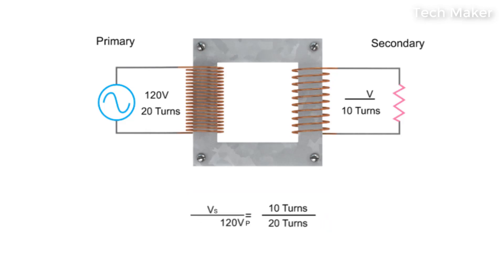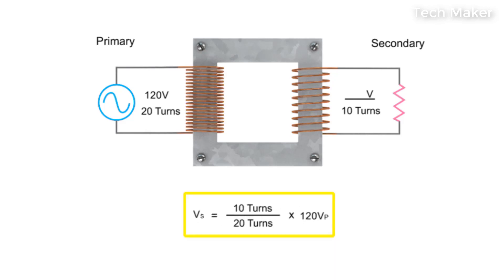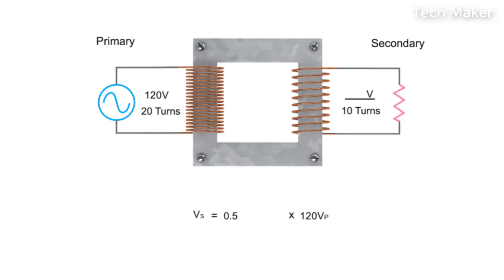In this example, we have 20 turns on the primary coil and 10 turns on the secondary coil. Rearranging the formula and dividing 10 turns by 20 turns, we get 0.5 multiplied by 120 V. This results in a calculated step down voltage of 60 volts.